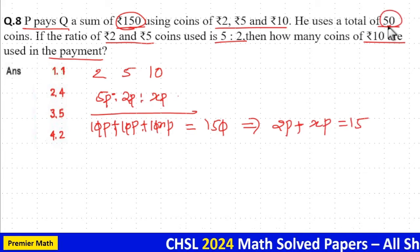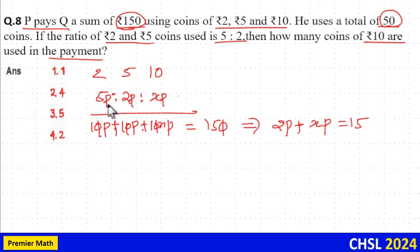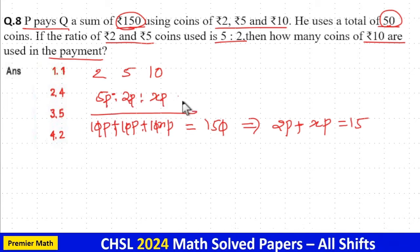Now, total number of coins is 50, which means 5 part plus 2 part plus X part is equal to 50.